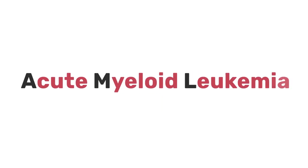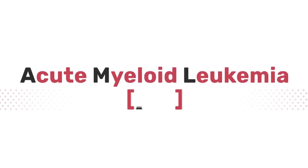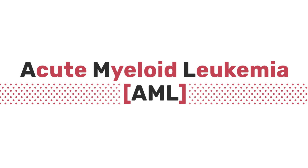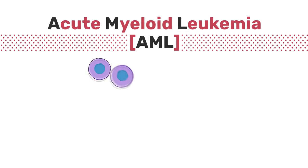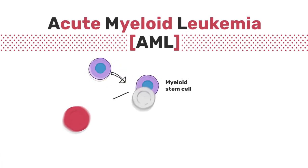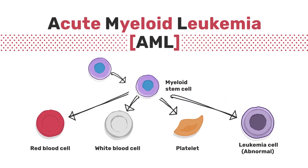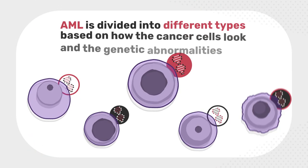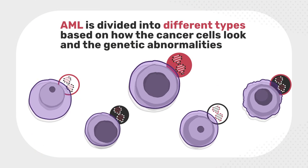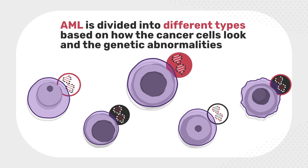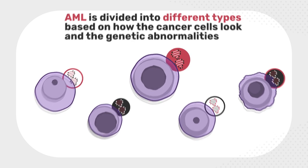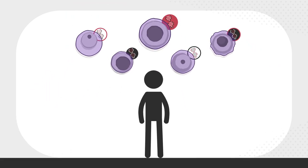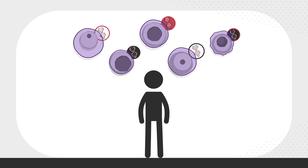Acute myeloid leukemia, also called AML, is a type of cancer that results from the production of abnormal blood cells. This is due to certain genetic changes in the cell's DNA, which are often referred to as genetic abnormalities. AML is divided into different types based on how the cancer cells look and the genetic abnormalities. The type of AML can determine how the disease will progress and respond to different therapy options.